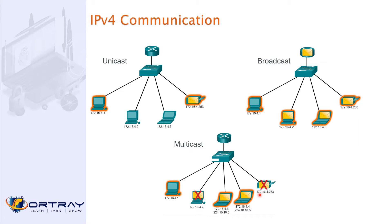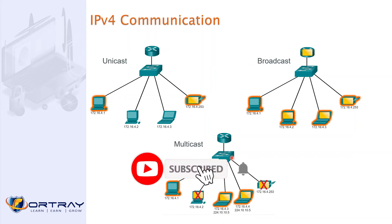For example, people come from East London, people come from West London — these are groups of people. You see this group and this group; these are two groups, and the others are not receiving it. The most likely use case is when you switch on TV on the Sky channels, as nowadays they use multicast traffic. When you join a channel to watch a live broadcast, like a Premier League match, you are just joining one channel — so basically you are receiving that stream.